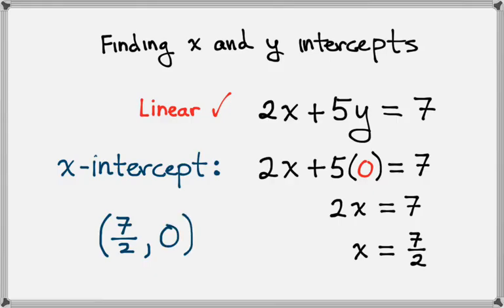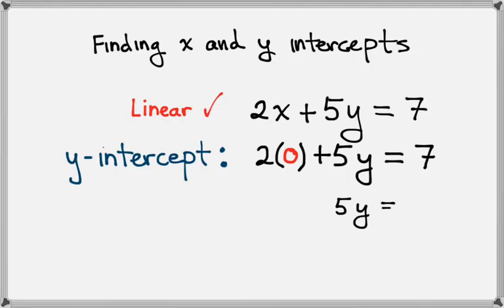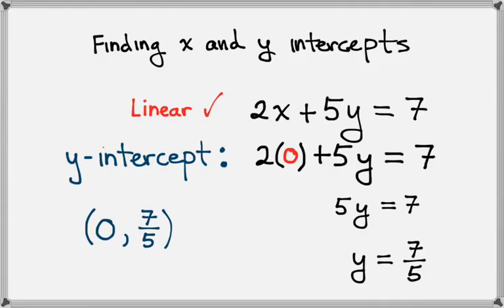So now let's look for the y intercept. This is going to be very similar except this time we're going to set x equal to 0. So we'll have 2 times 0 plus 5y equals 7. Then on the left hand side that leaves us with 5y and on the right that leaves us with 7. Now we'll just divide both sides by 5 and we'll get y equals 7 fifths. So our y intercept is the point with the x value of 0 and the y value of 7 fifths.